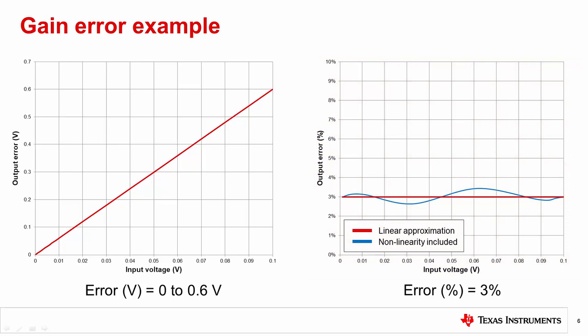If we consider the effect of amplifier non-linearity as well, the error line would no longer be straight. Instead, it would look more like the blue curve, depending on the internal architecture of the amplifier. We recommend selecting an amplifier with a gain error specification that meets or exceeds your total error requirement.